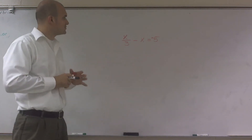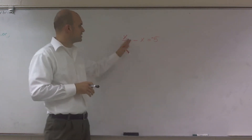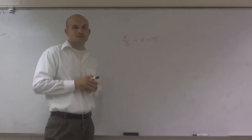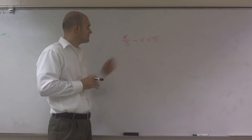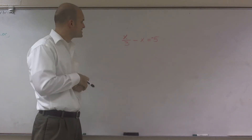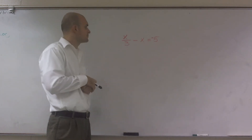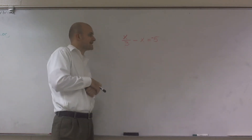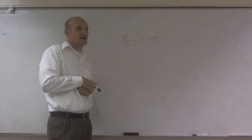What I'd like to do is show you how to solve this equation. What we have here is x divided by 3 minus x equals negative 5.